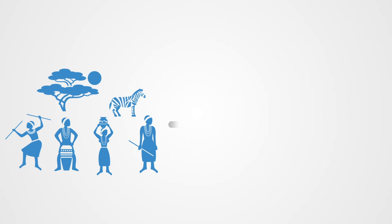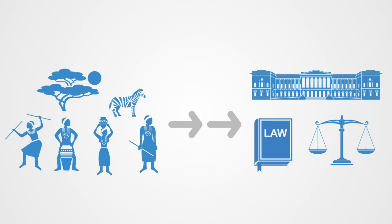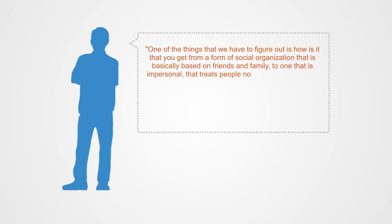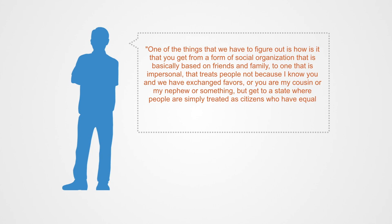An essential question in the study of the evolution of political systems is: how do we go from small political systems based on personal ties to a modern political system based on impersonal institutions? As political scientist Francis Fukuyama stated, we have to figure out how you get from a form of social organization based on friendships and family to one that is impersonal — where people are treated not as cousins or favors-exchangers, but simply as citizens with equal rights and equal access to the state.